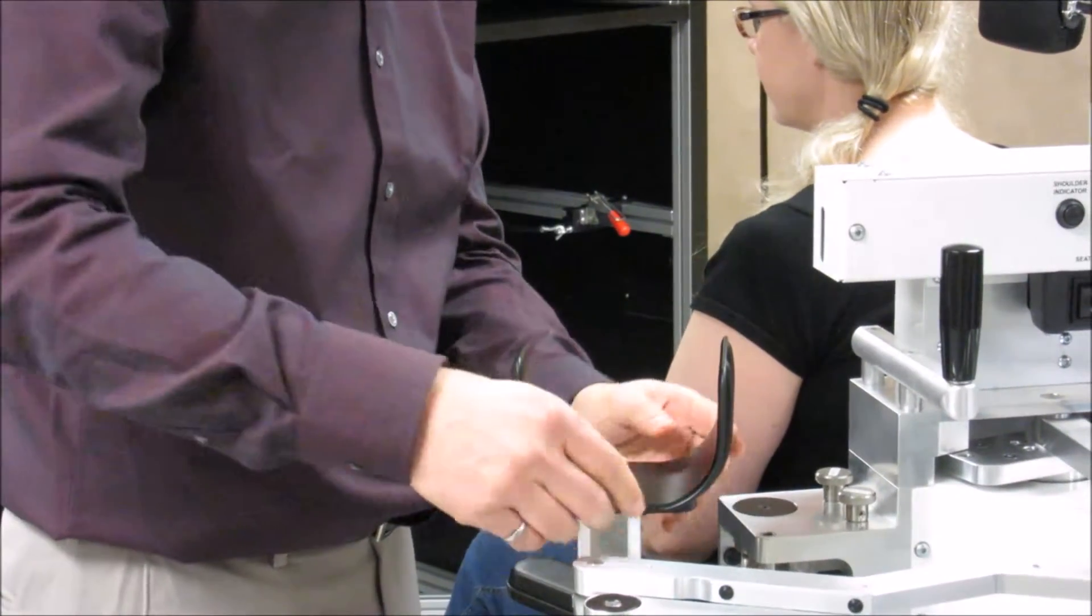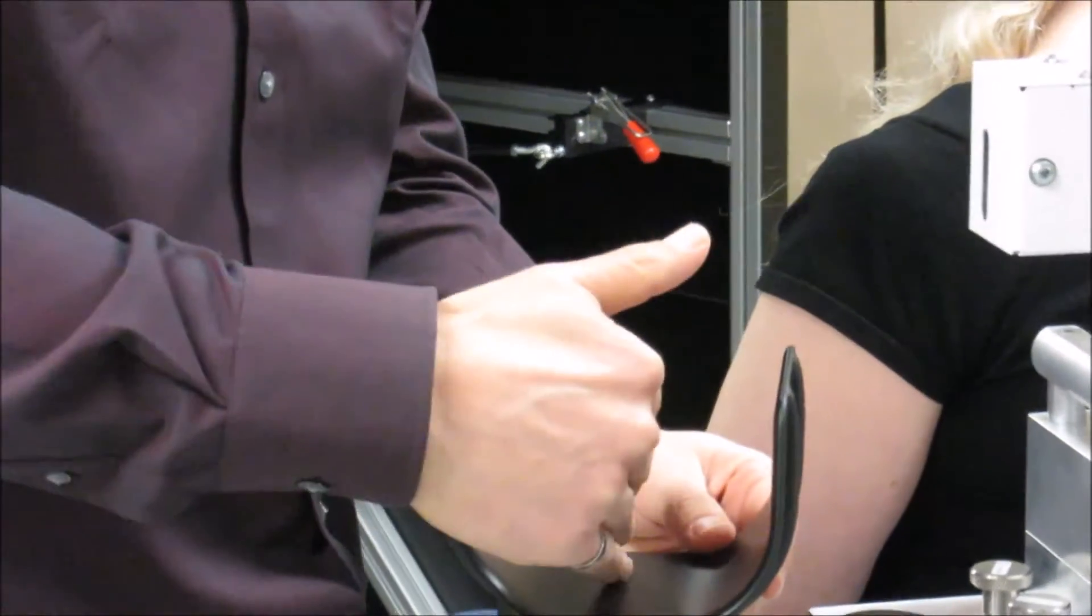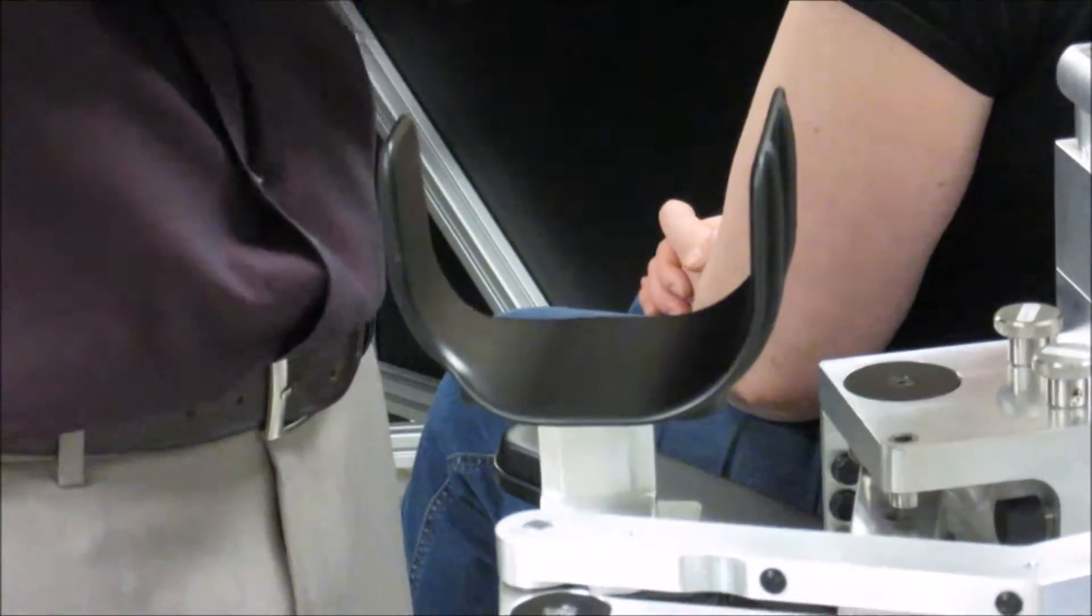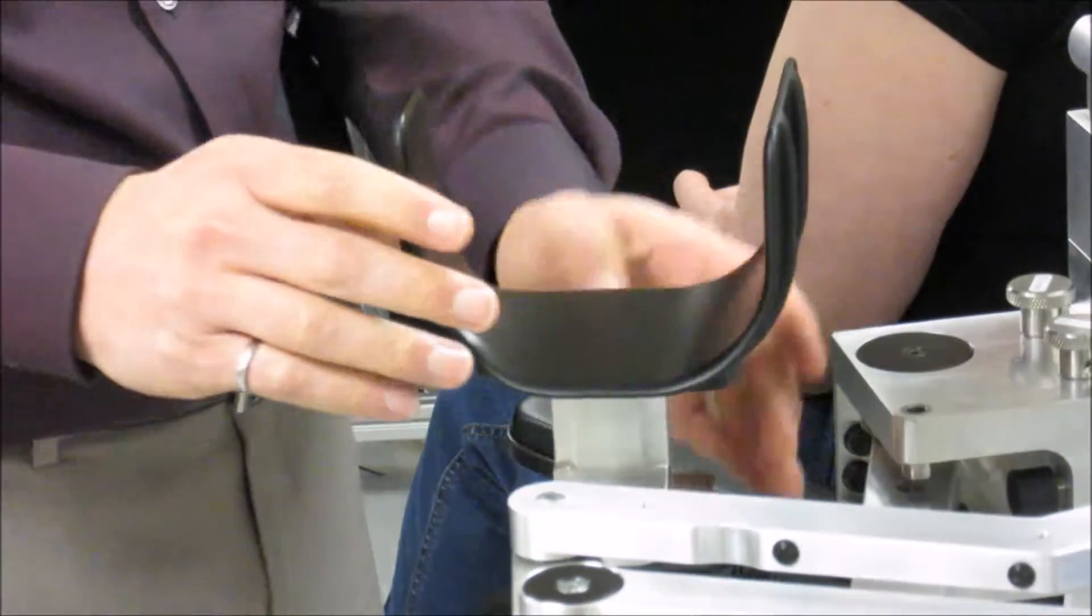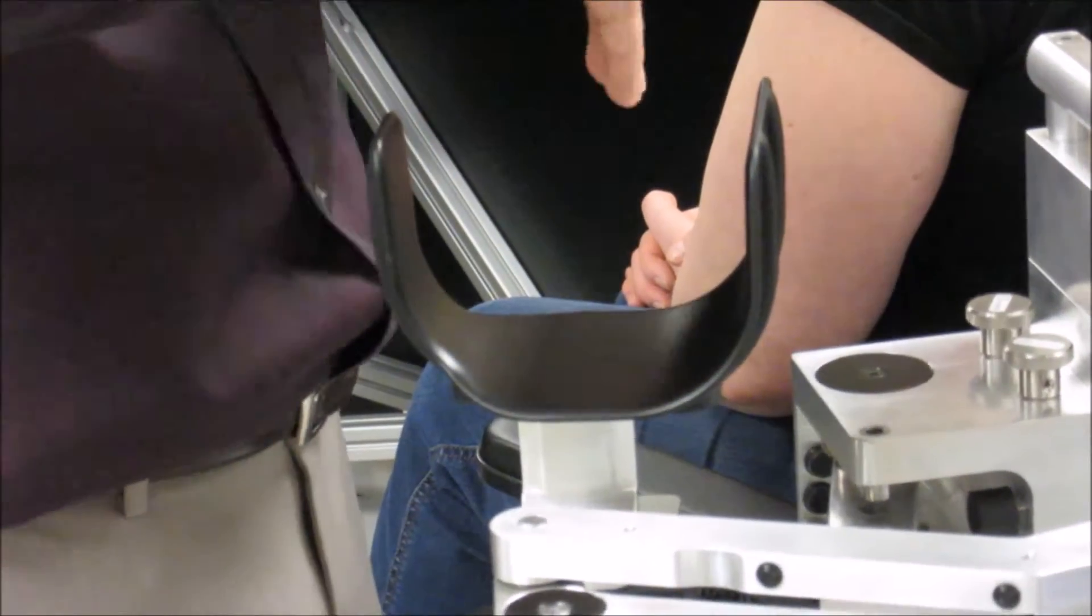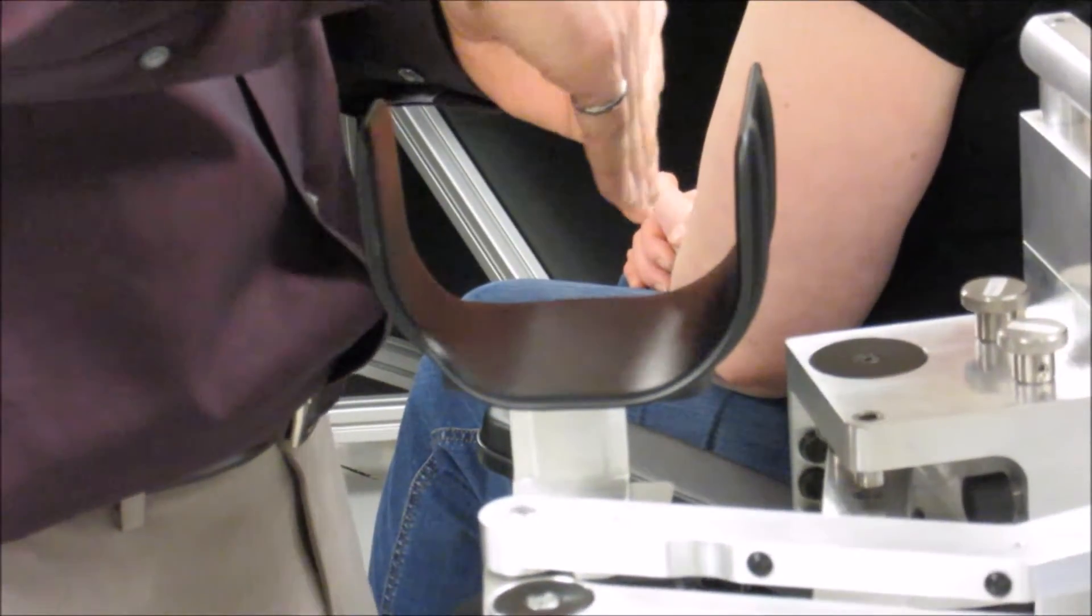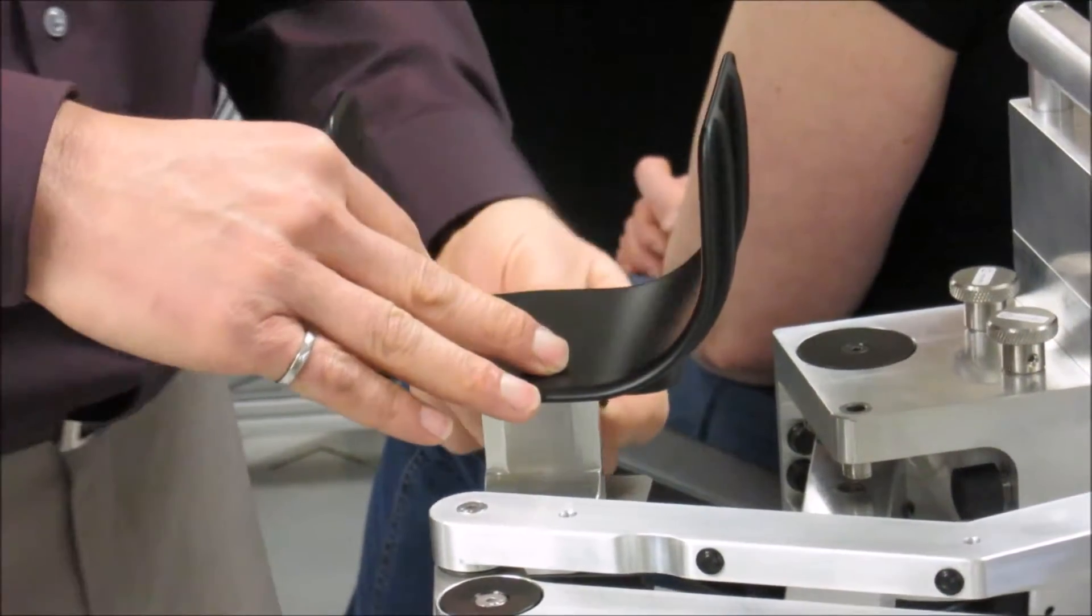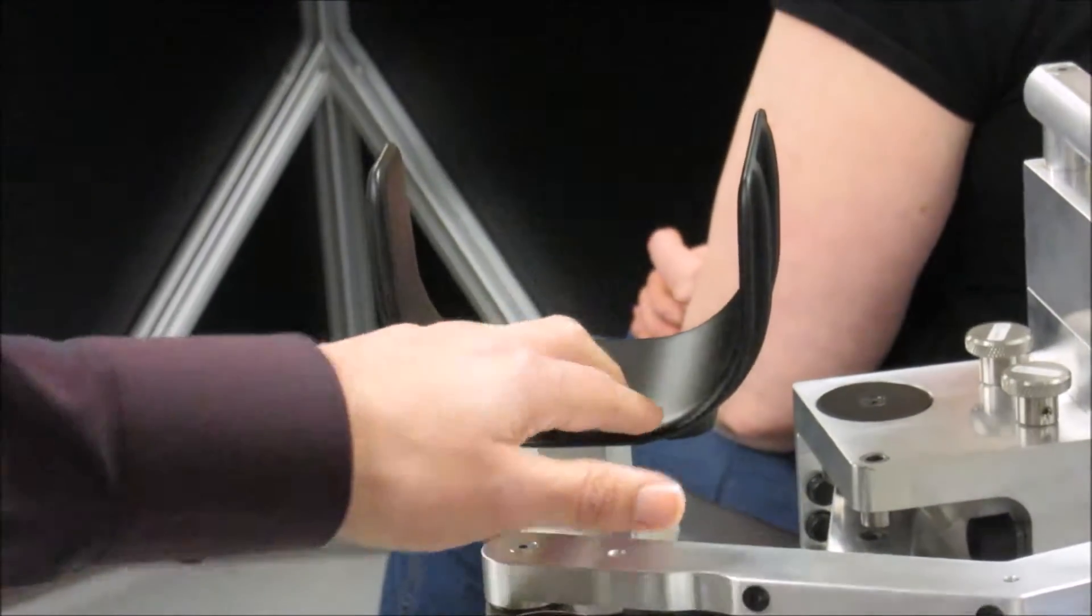For the upper arm trough, usually it should be aligned along the midline. However, if your subject has a very large bicep or a very large tricep, you may want to adjust it so that the line between the shoulder and elbow centers of rotation are lined up with those of the robot.